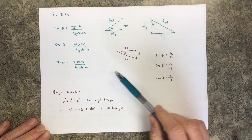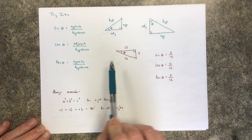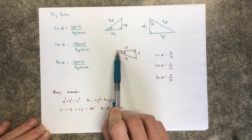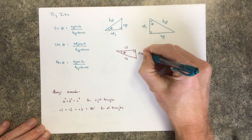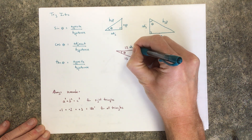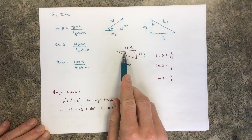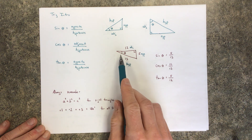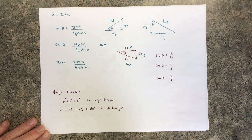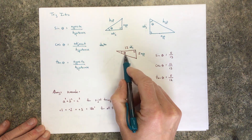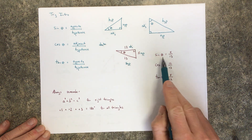Let's take a look at a numerical example. Take this 5-12-13 right triangle and look at angle theta. Sine of theta should be opposite over hypotenuse. The 5 is opposite the angle, the 12 is the adjacent, and the 13 is the hypotenuse. So sine of theta equals 5/13. We usually use theta when talking about an angle — it's just a Greek letter, like x. Cosine of theta would be adjacent over hypotenuse, and tangent would be opposite over adjacent.